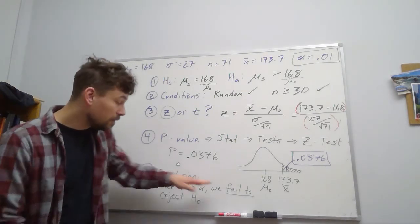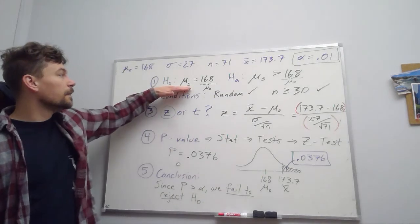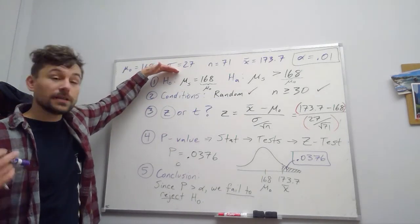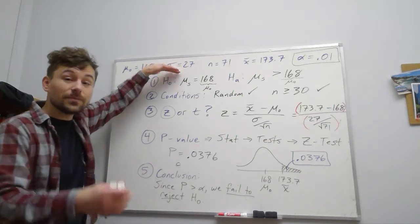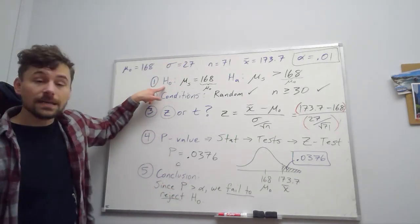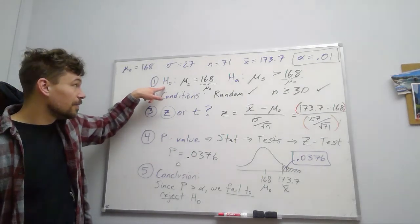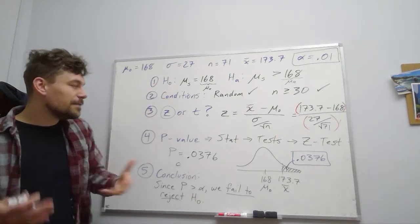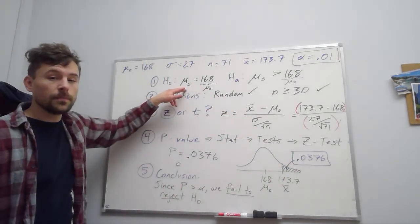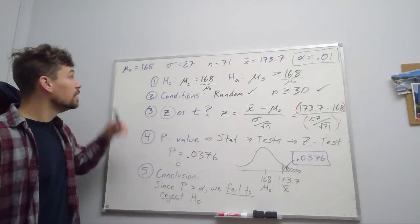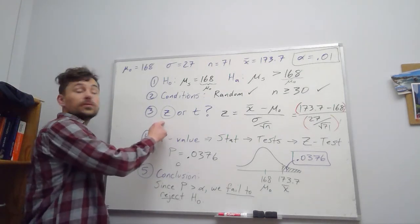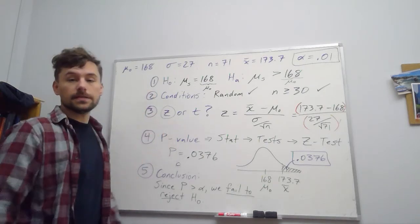Now, keep in mind, fail to reject. We're always looking to prove this thing guilty. In court, they always say you are guilty or you are not guilty. What they don't say is you're innocent. So we never embrace the null hypothesis, right? We just say we fail to reject it. We didn't find enough evidence to say that this was wrong. That's the general idea walking through a hypothesis test where we're using z as our test statistic.